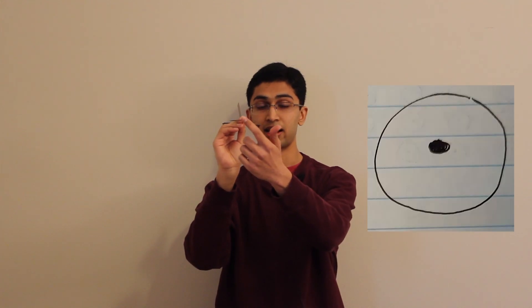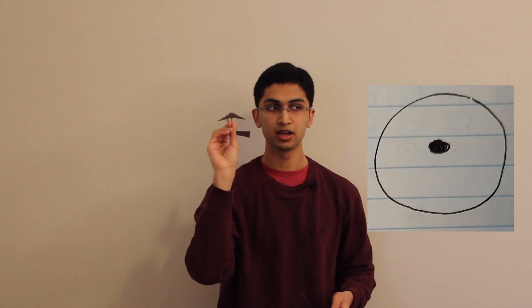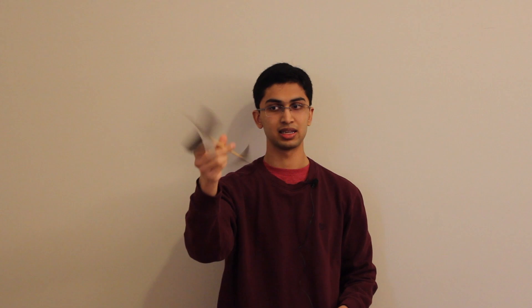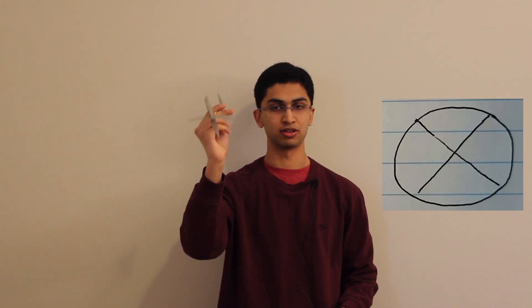You're probably wondering where this dot and cross convention comes from. The way to think about it is to picture a vector like an arrow. If you have a vector coming out of the page towards you, what you see is a dot — that's the tip of the arrow. Conversely, if you have a vector going into the page away from you, what you see is a cross — that's the tail of the arrow. So out of the page is a dot, and into the page is a cross.